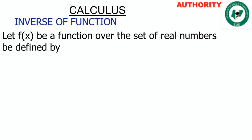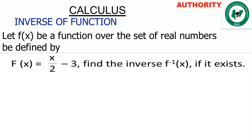Now let's go. We are going to treat inverse of a function. This question says: let f(x) be a function over the set of real numbers, defined by f(x) = x/2 − 3. Find the inverse, if it exists. Now I want you to get the point about inverse of a function.